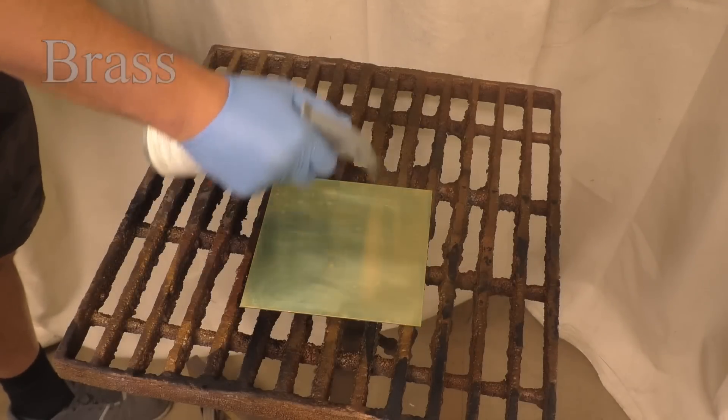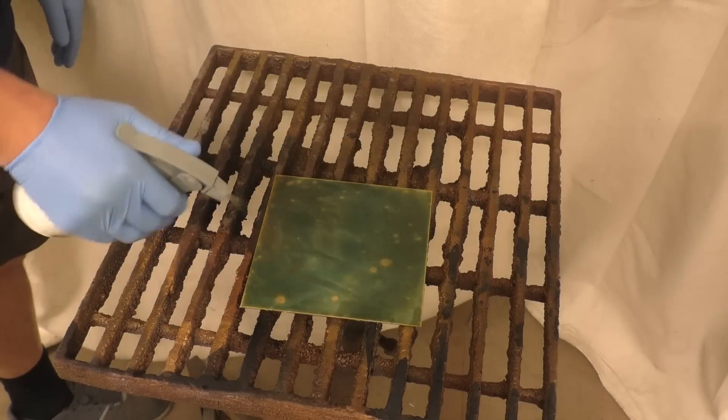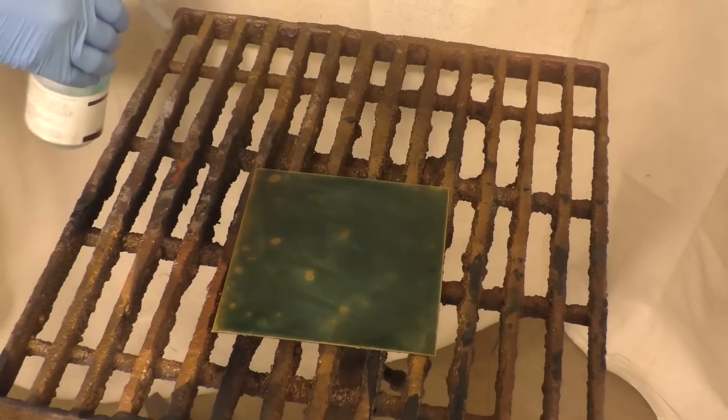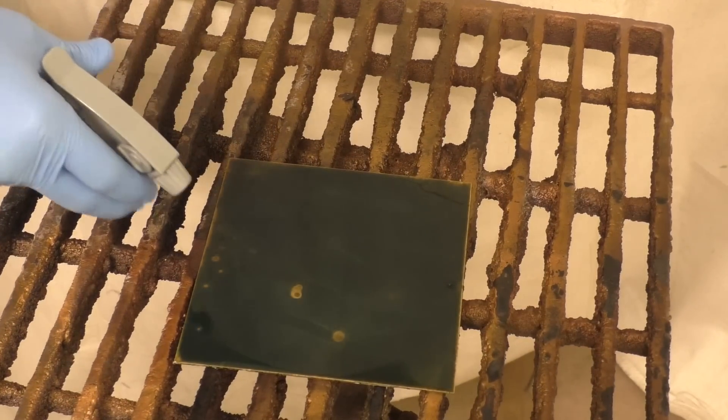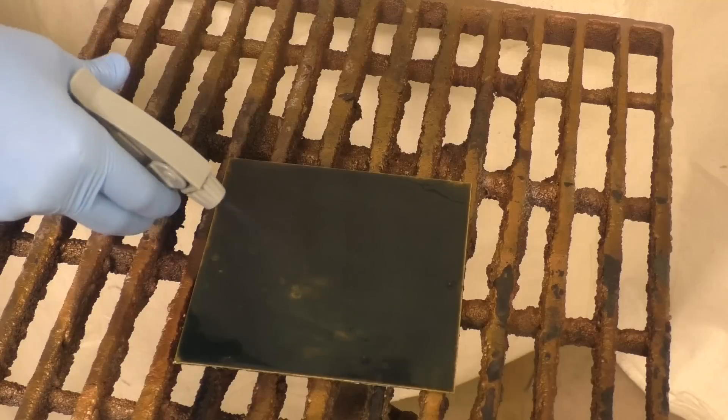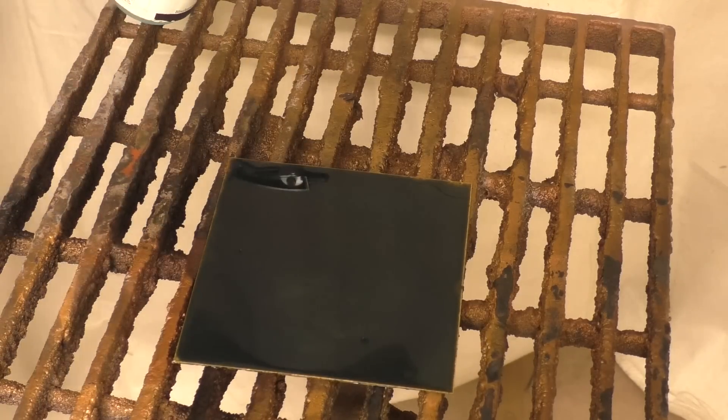Now we're going to go into the brass and you can see the brass is going to react very similarly to the bronze. It reacts more with the copper content that's in the metal, so brass is going to be a little bit lighter sometimes, a little bit more of a muted color than the bronze and copper.